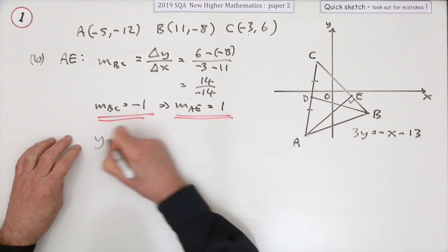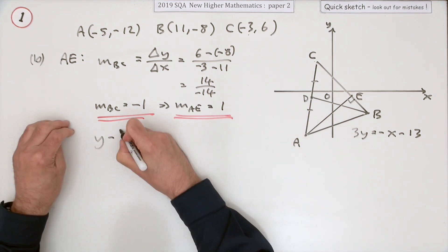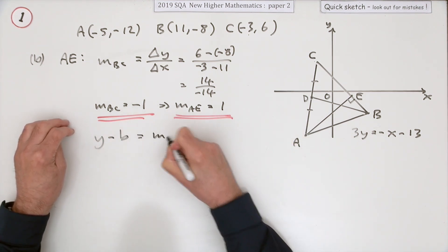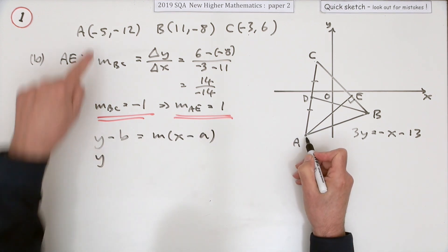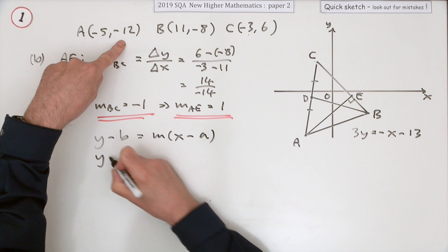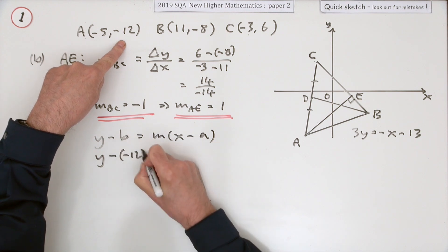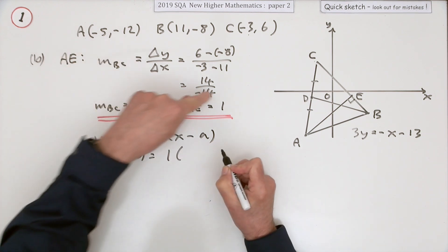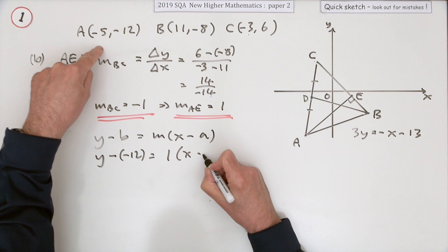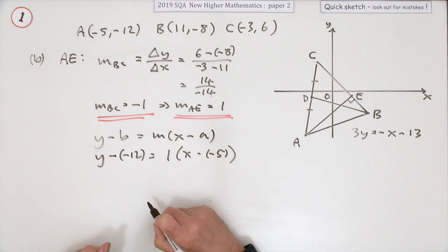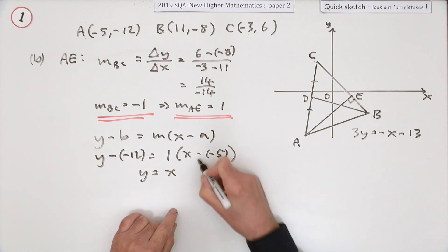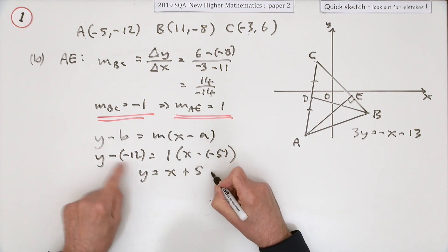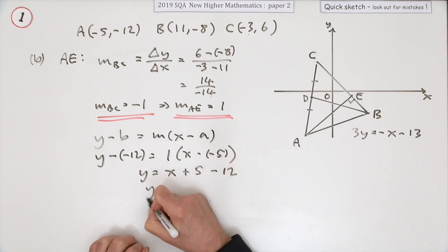The same as before, nothing special I can see about the line, so I'll just have to go in with the full equation y minus b is mx minus a. It's only point A that I know. Y minus the y coordinate is the gradient which was nicely just 1, x minus the x coordinate. Or you could have gone straight in with positives, so y equals x. I might as well put this bit down plus 5, but that'll be minus 12, so y equals x minus 7.